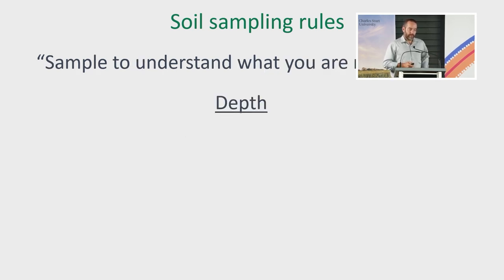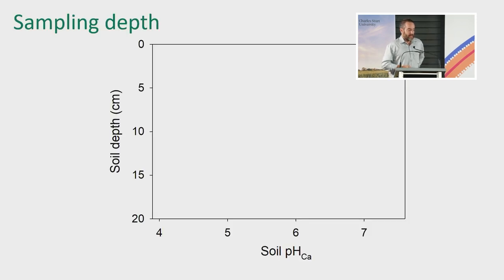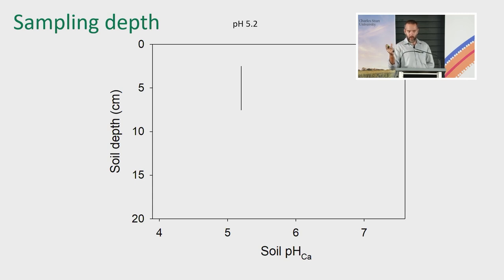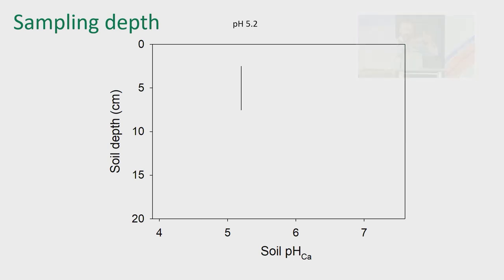We need 25 to 30 cores because that gets rid of the variability and gives a number more likely to represent what you've actually got and what your plants are experiencing. The other thing when sampling is to understand what you're actually trying to manage — the root zone, especially near the surface for pasture establishment. On this graph, the Y axis goes from 0 to 20 centimetres depth, and the X axis is soil pH. If you do 0 to 10 soil sampling, you get an average of the pH in that 0 to 10 band. pH isn't uniform — it changes as you go down the profile. Taking 0 to 10 gives you one number — in this case, 5.2. If you'd limed and come back to 5.2, you'd think the lime worked and you can grow whatever you want.